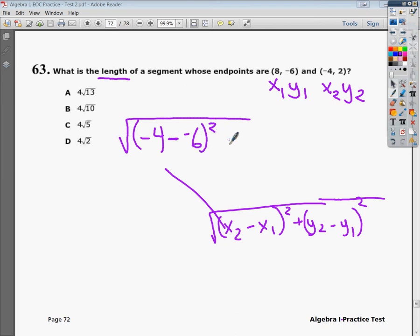That's squared. My, I actually did y's for, I mixed my x's and y's there. Sorry about that. I'm losing my mind. So my x of 2 is negative 4. My x of 1 is 8. I don't know what I was thinking. So square. And then add y's of 2, which is 2, minus y's of 1, which is negative 6, squared.